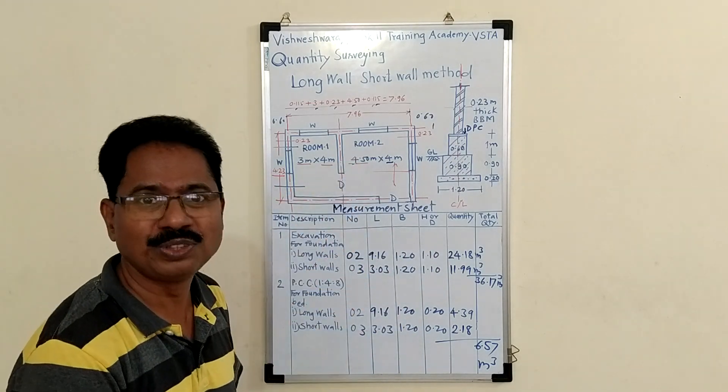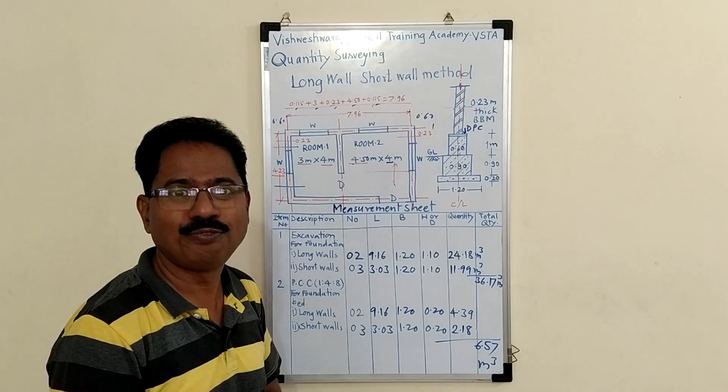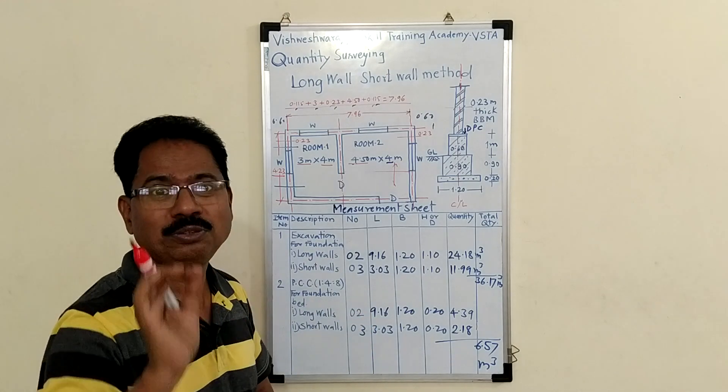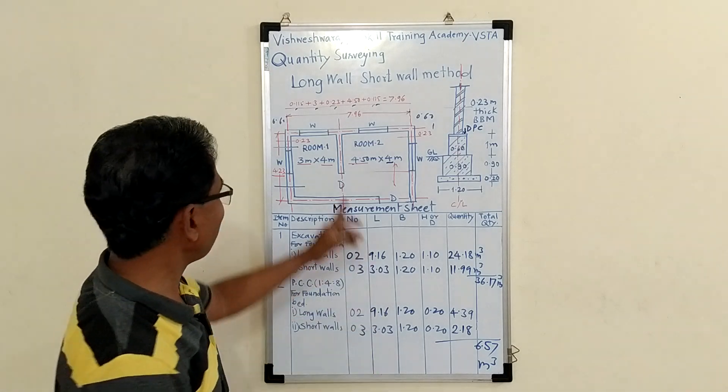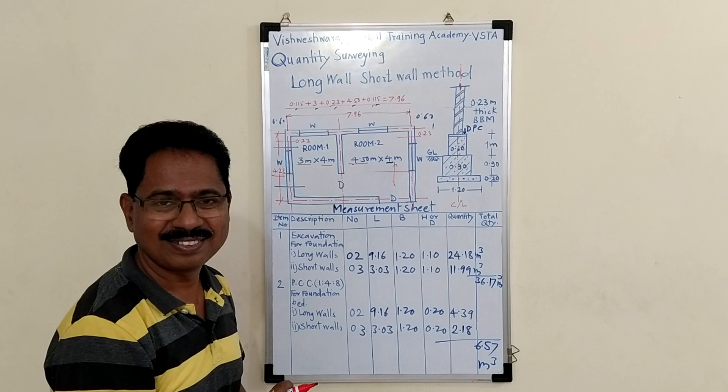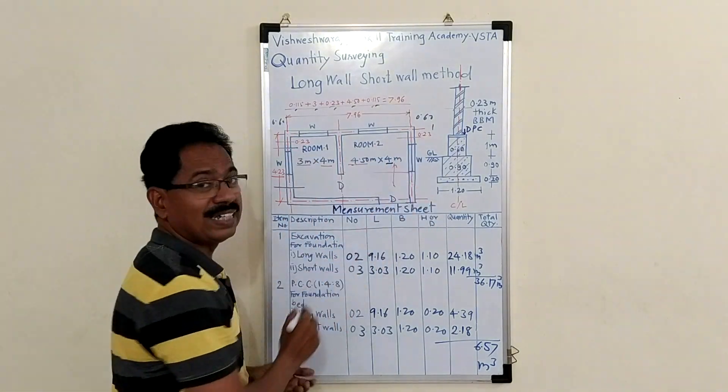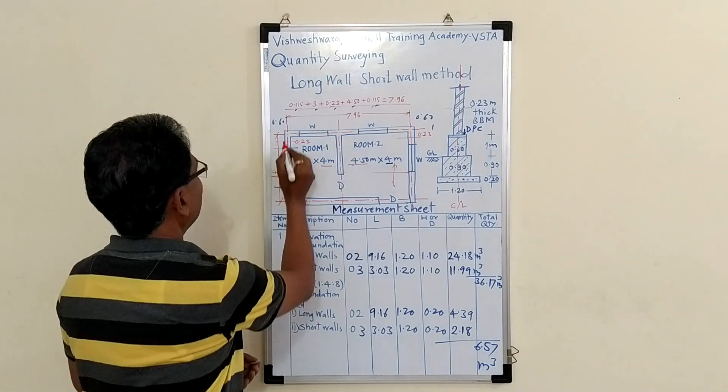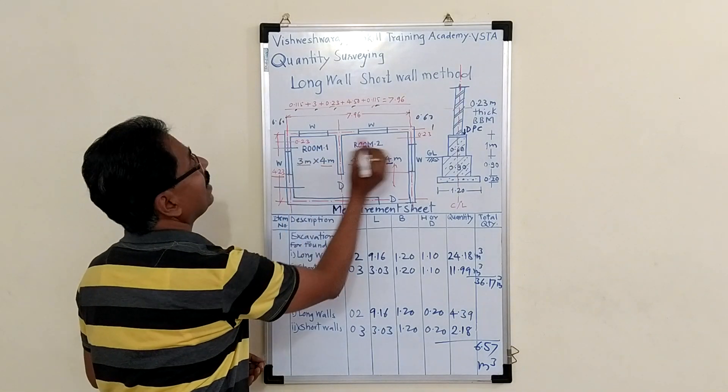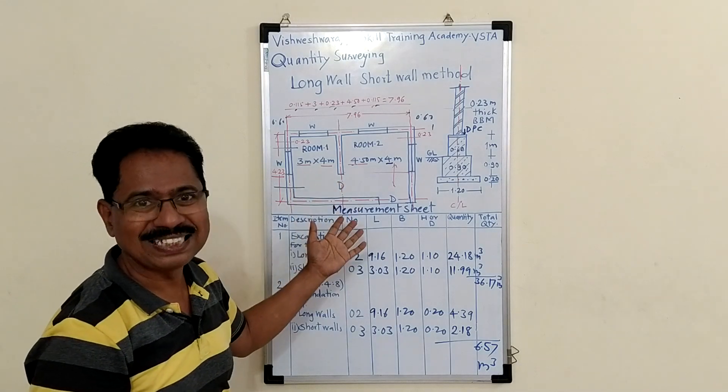So, how to calculate, how to proceed. First of all you have to find center to center lengths. You see these red figures are shown. This red line is a center line. So, from this line to this line, how much is the length?